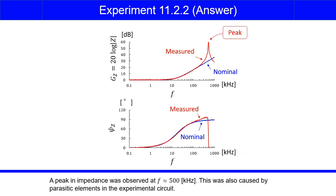A peak in impedance was observed at F was approximately equal to 500 kHz. This was also caused by parasitic elements in the experimental circuit.